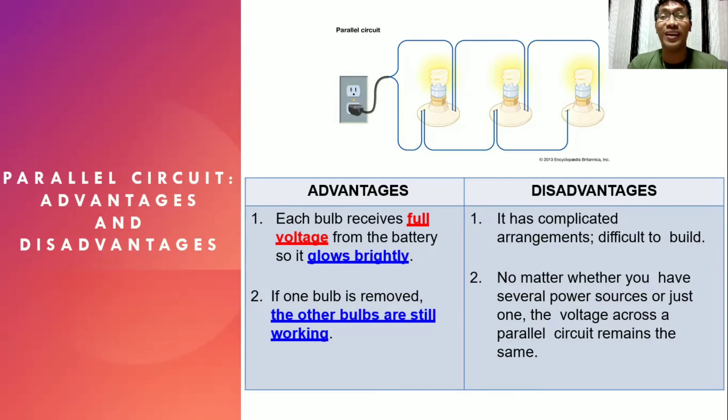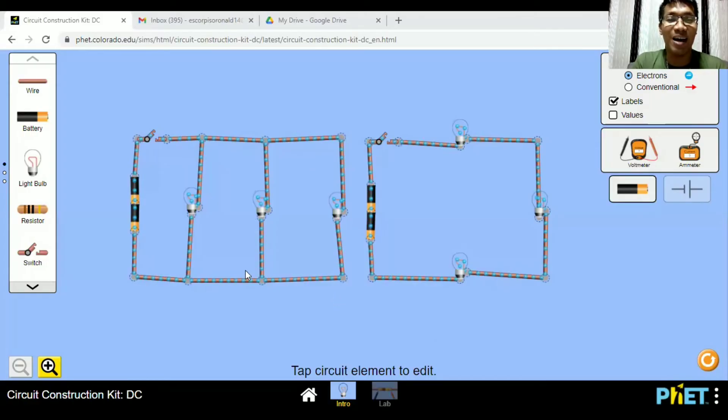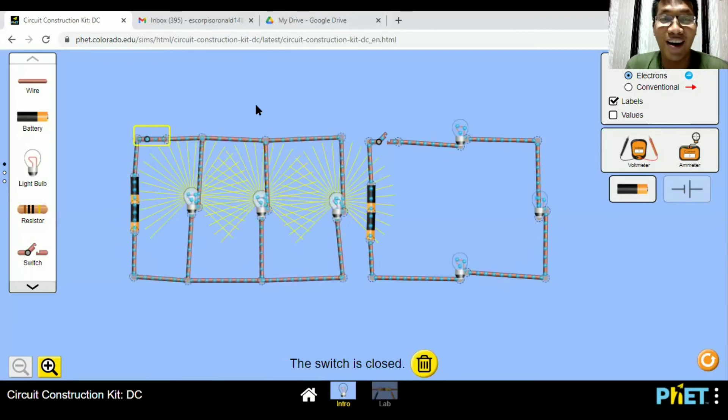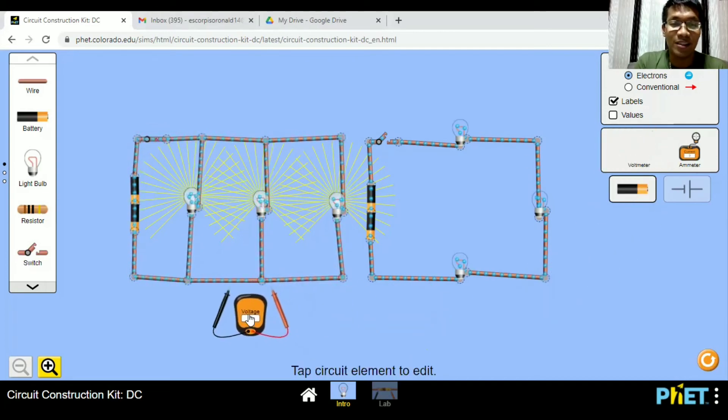For us to further understand and visualize the parallel circuits, let's check these simulations. You can see here that we have a parallel circuit and a series circuit. But first, let us focus on the left side diagram. We have here three bulbs connected in parallel, a switch, and two batteries. Let us try now to turn on the switch. There you go. So all the bulbs are working. Now, let us try to check the voltage in this circuit using the voltmeter. When we use a voltmeter, it should be in parallel. So connect it here and connect it here. Based on the reading, we got 18 volts for this bulb.